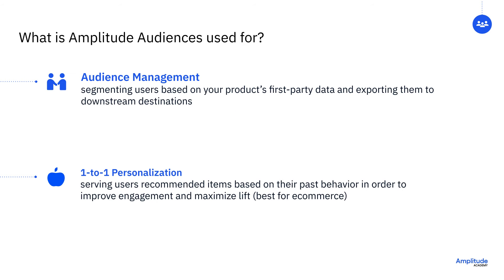Amplitude Audiences also helps you automatically leverage machine learning for one-to-one user-based personalization. This is best used by e-commerce businesses or marketplaces, where users get served a list of recommended products. This course will briefly touch on recommendations, but for the most part will be focused on audience management.